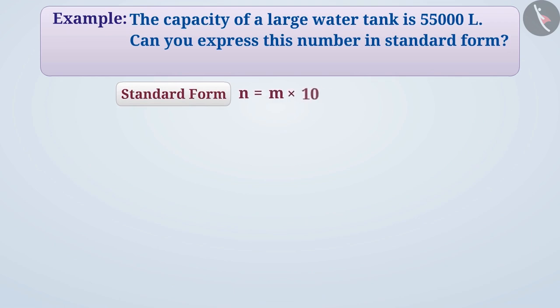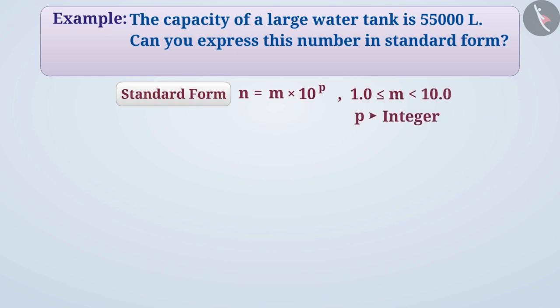Any number can be expressed in standard form as n = m × 10 to the power of p, where the value of m is greater than or equal to 1.0 and less than 10.0, and p is an integer.